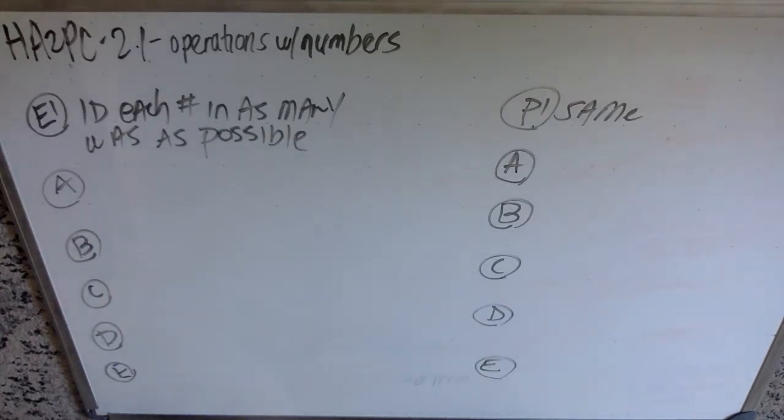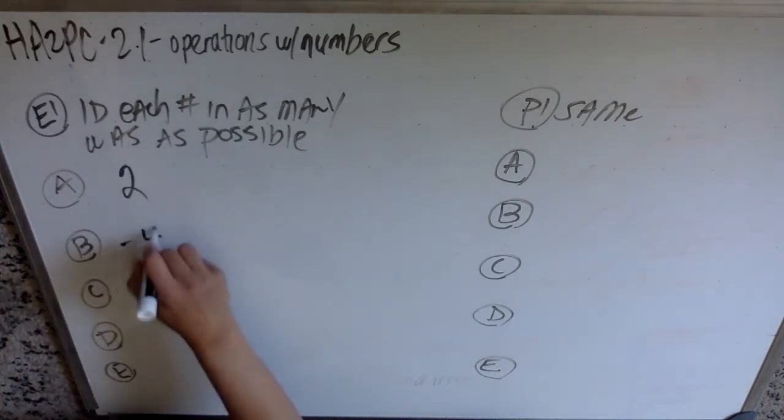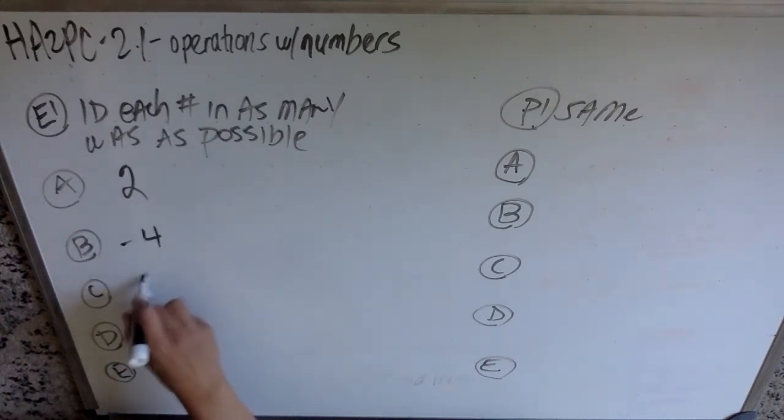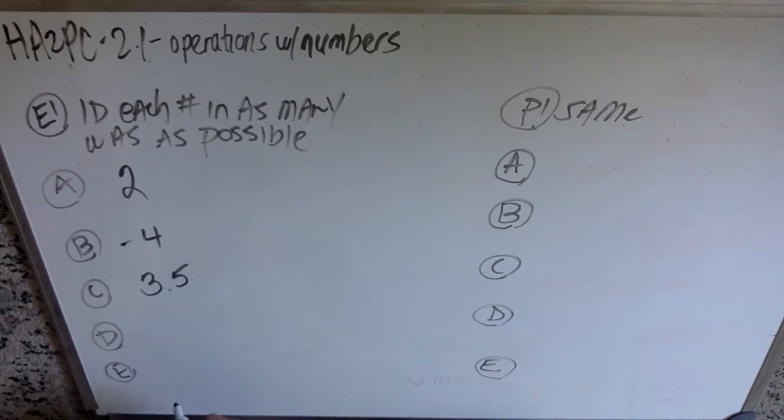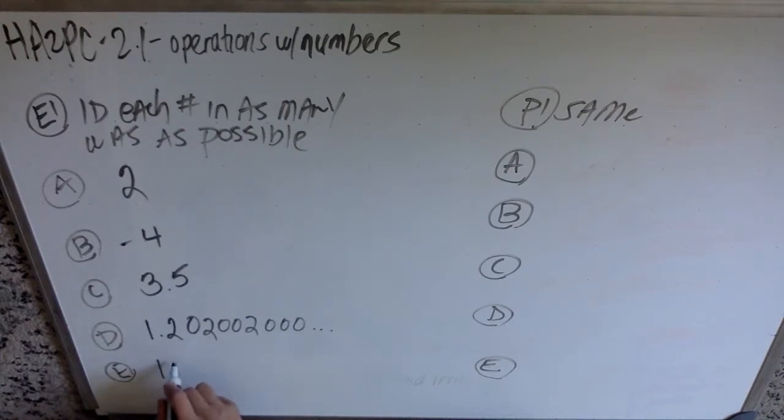I'm just gonna give you a bunch of numbers. A, B, C, D, and E. Those obviously aren't numbers. That's where I'm gonna write the number. I mean, I guess they could be if they were a variable expression, but I'm not getting all tricky here. I'm gonna give you some numbers, and we're gonna identify those numbers in as many ways as we possibly can. Let's do two. Let's do negative four. Let's do 3.5. I'm gonna do 1.2020200200000. And I'm gonna do 1.22, we'll do 2.1 repeating. Let's give it a try.